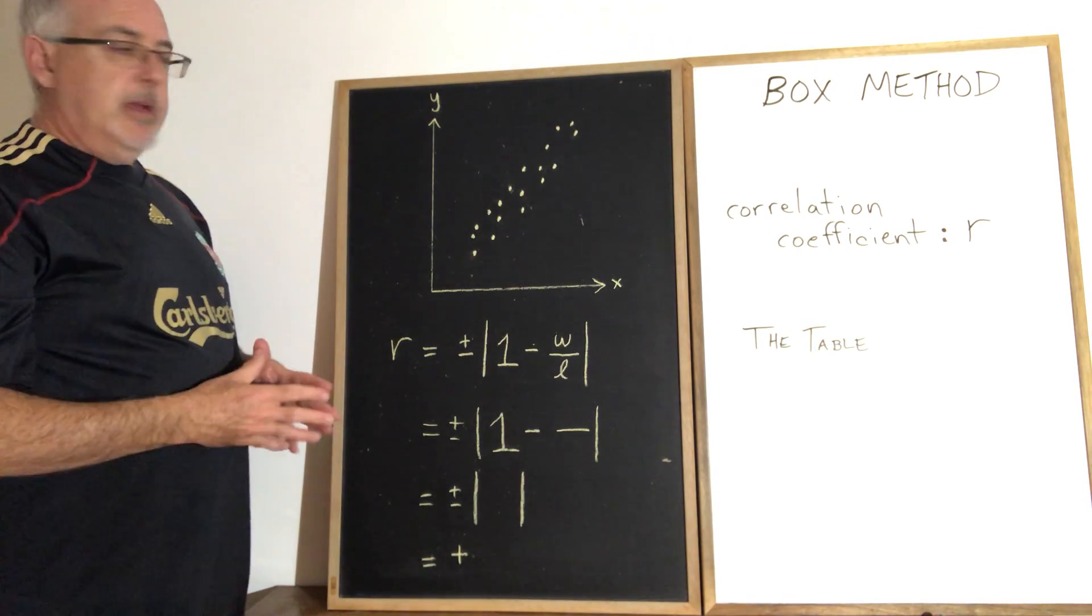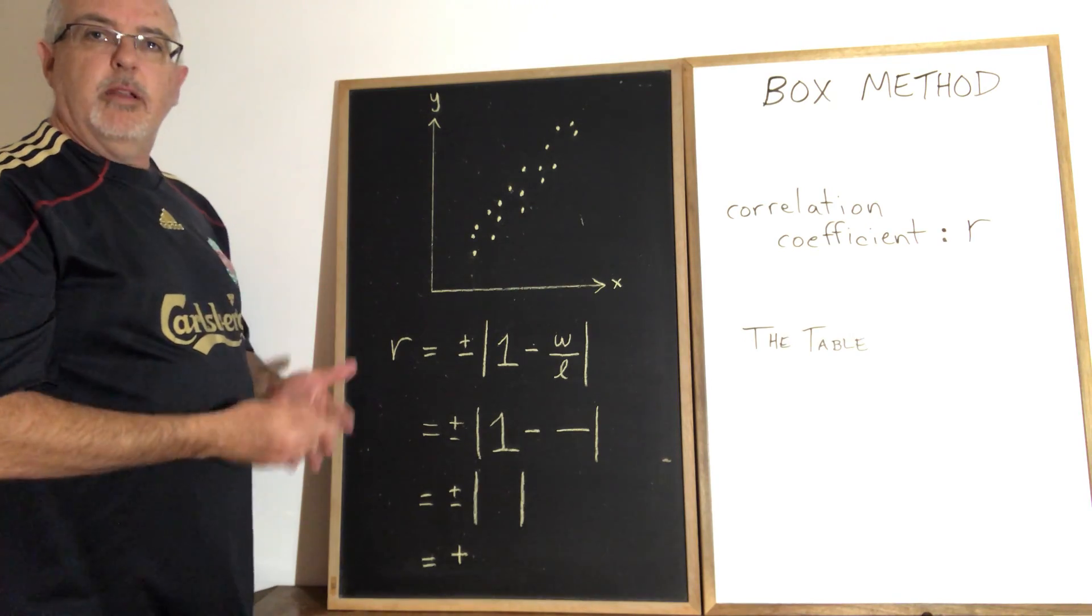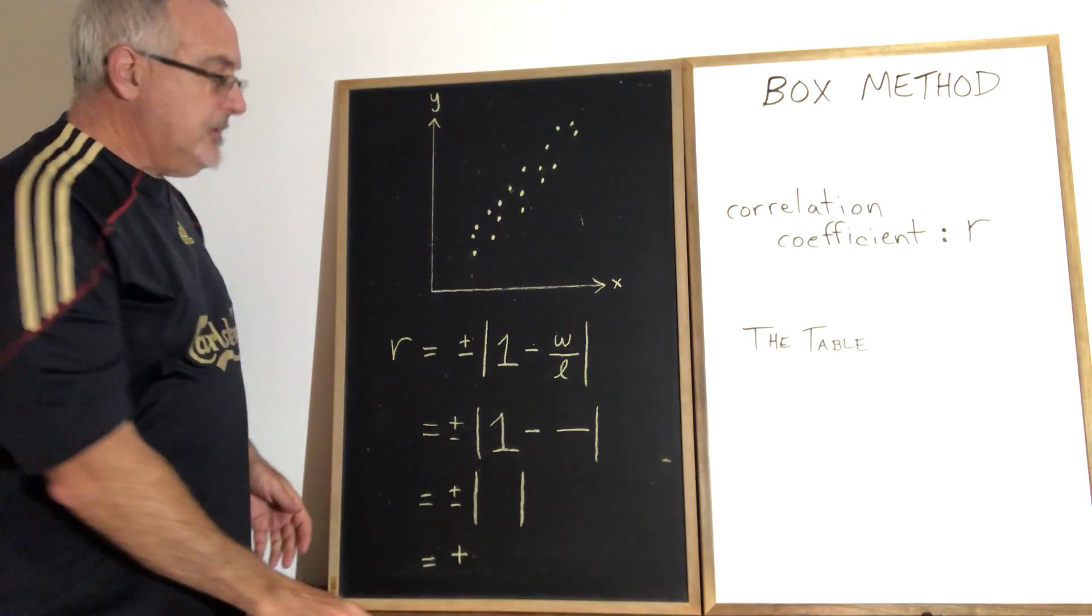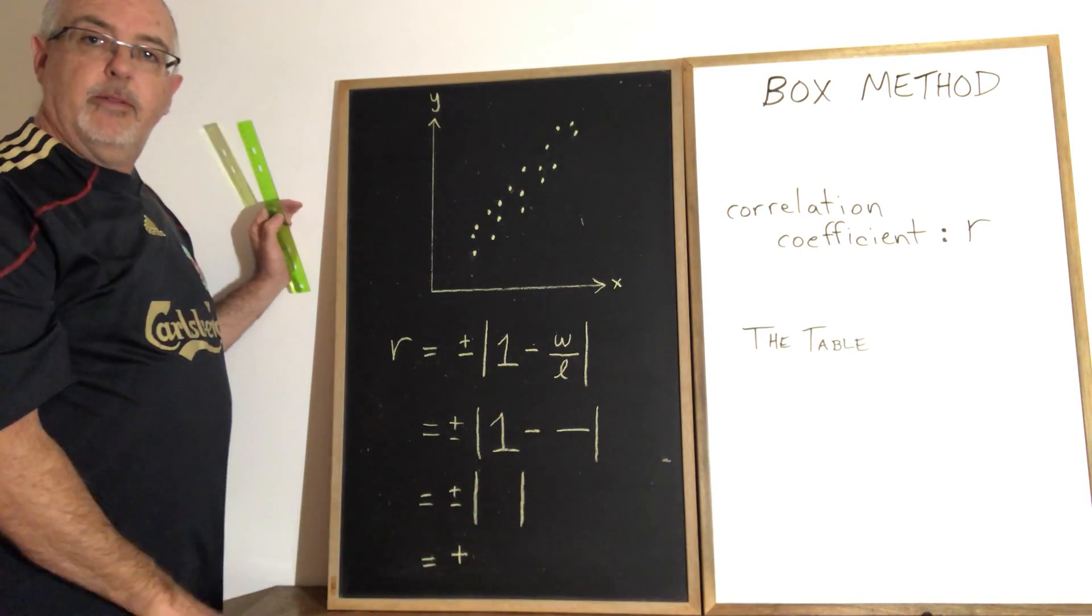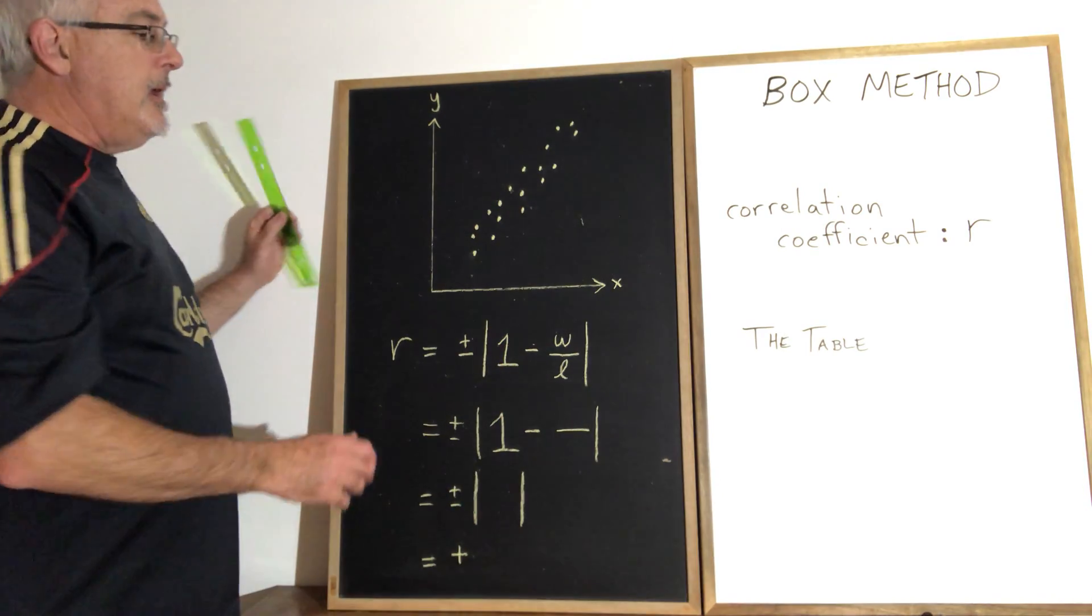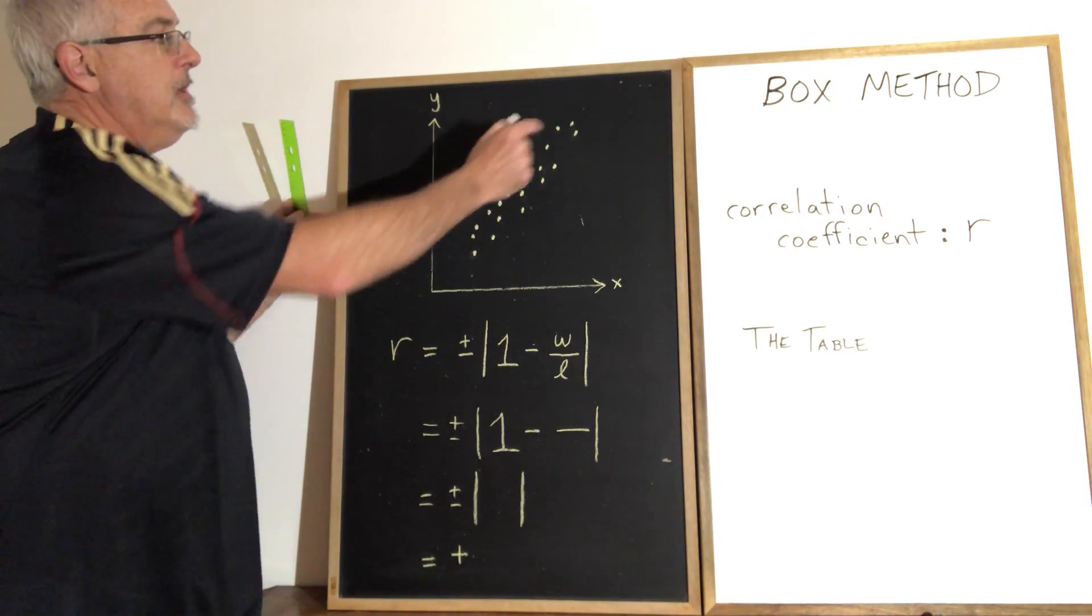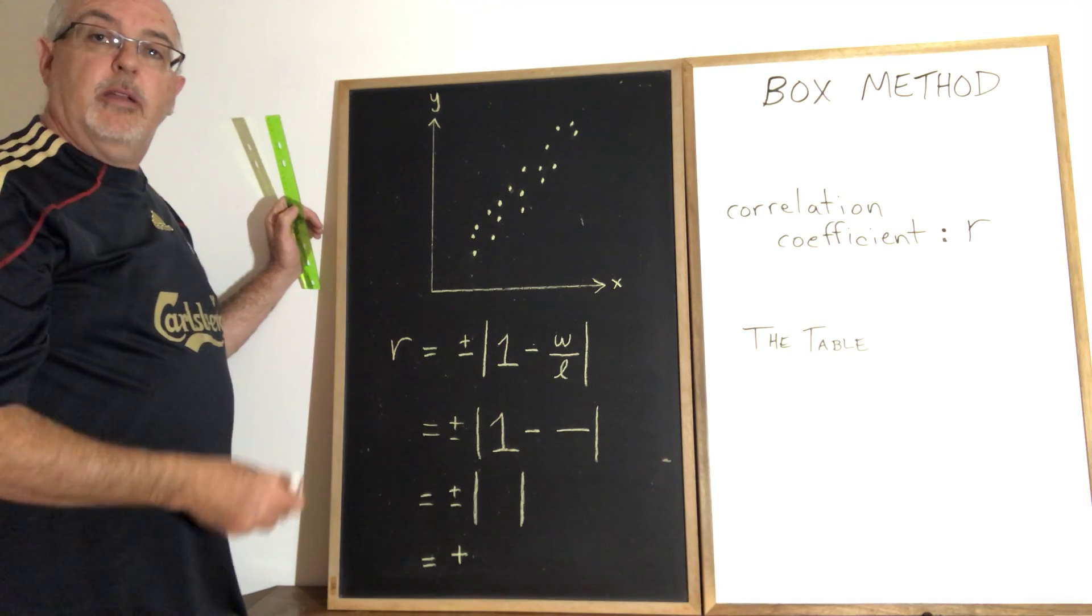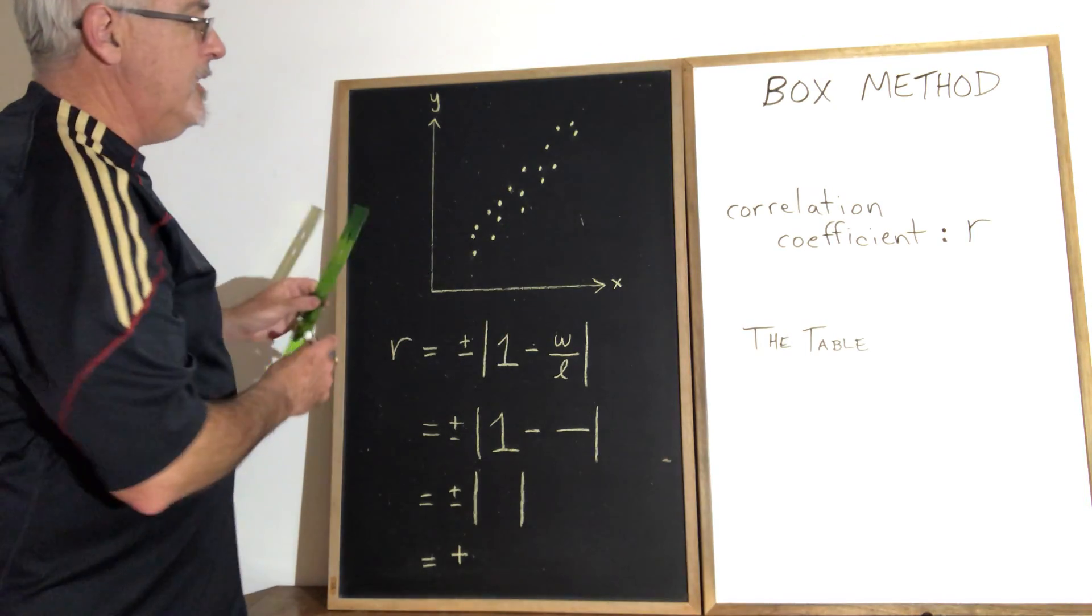The first step I recommend for drawing your rectangle is to draw the line of best fit first. Some students skip this step and can still manage to get a correct r-value. But I like to draw my line of best fit first because it allows me to draw a better rectangle, and the line of best fit is useful for other techniques I'm not teaching in this video.